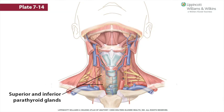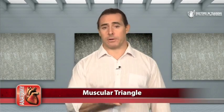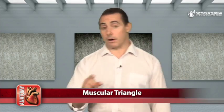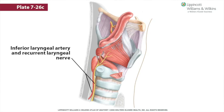The superior and inferior parathyroid glands — four small, pea-sized glands — are found on the deep surface of the thyroid gland. The parathyroid glands produce parathyroid hormone, which, along with calcitonin, is involved in the regulation of calcium levels in the blood. These glands are supplied by branches of the thyroid arteries and are also hormonally regulated. Another structure found in the muscular triangle is the recurrent laryngeal nerve, a branch of the vagus nerve, which is accompanied by the inferior laryngeal artery, a branch of the inferior thyroid artery.